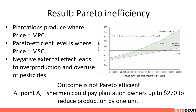At point A, fishermen could pay plantation owners up to $270 to reduce production by one unit. The loss to the fishermen is $270 if the last ton is produced. They could offer to pay that to the plantation owner to cut back production. In this case, they would be no worse off, but the plantation owner would be better off since they receive $270 while losing only a minimal amount in marginal profit. This negotiation can continue until output is cut back to 38,000 tons — the socially optimal outcome.